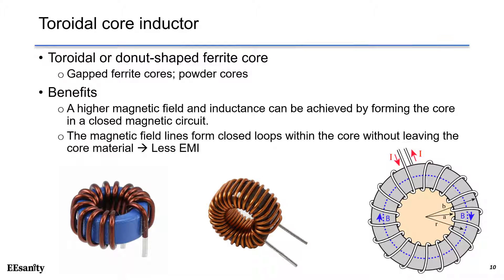Here is another type of inductor called the toroidal core inductor. It uses a toroidal or donut-shaped ferro core, with two types of core materials: gapped ferro cores and powder cores. Due to its symmetry, the amount of magnetic flux that escapes outside the core is very limited, making it more efficient and generating less EMI. Toroidal inductors and transformers are used in power supplies, inverters, and amplifiers. A higher magnetic field and inductance can be achieved by forming a closed magnetic circuit, and the magnetic field stays within the core material, causing less EMI issues in surrounding circuits.